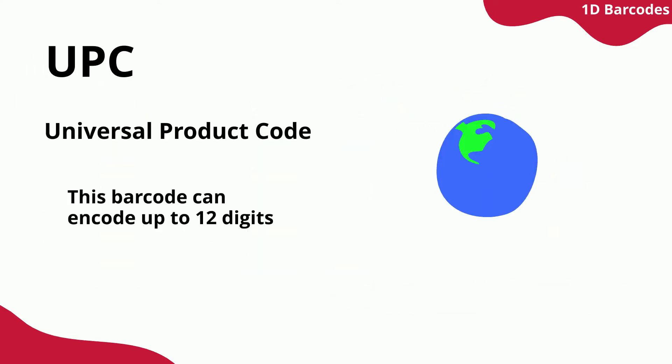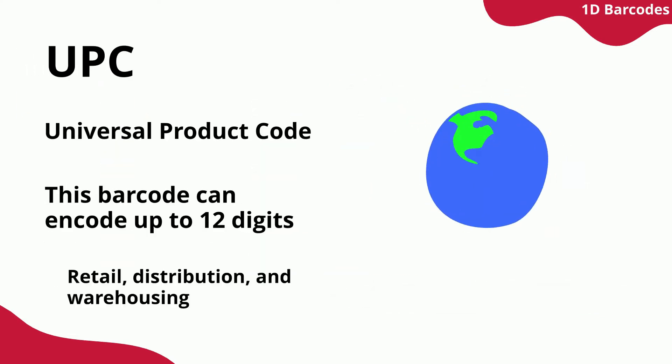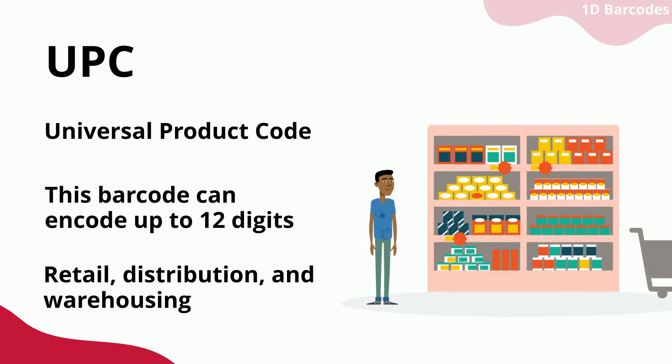UPC, the Universal Product Code, is mainly used in North America. It encodes 12 numeric characters. The retail sector uses it in the same way as the EAN.